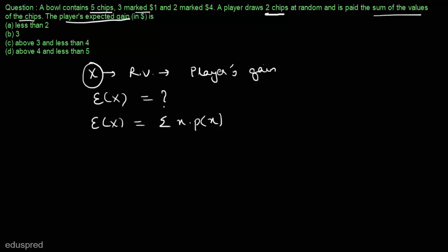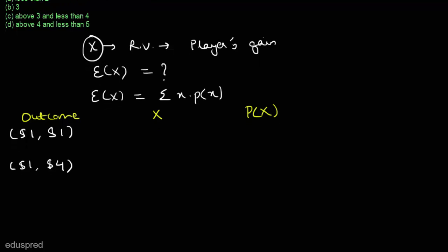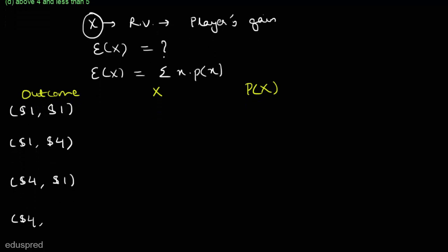To calculate the expected value of x, let's list down all the possible values of x. I'm making three columns: outcome, possible values of x, and probability of x. The player draws two chips, so the possible outcomes are: first chip one dollar and second chip one dollar; first chip one dollar and second chip four dollars; first chip four dollars and second chip one dollar; or both chips marked four dollars.